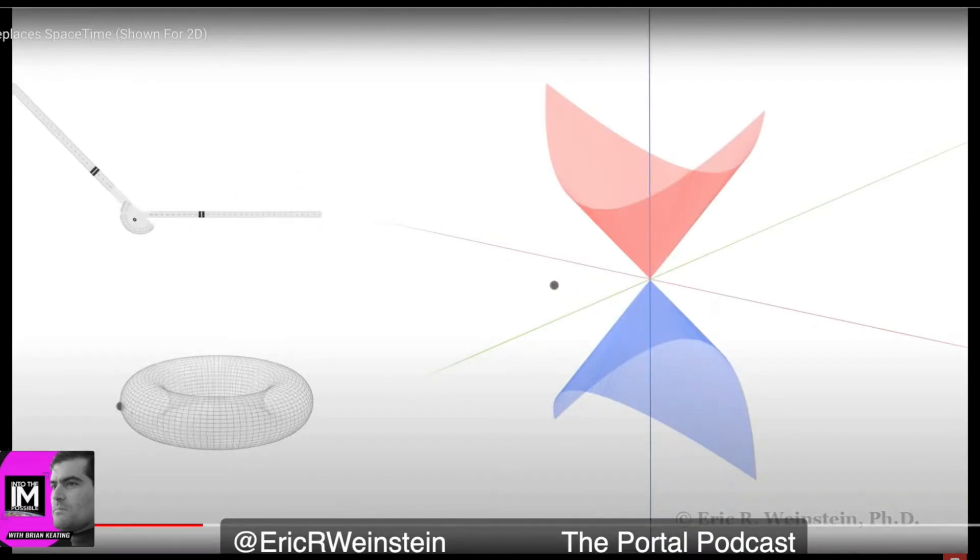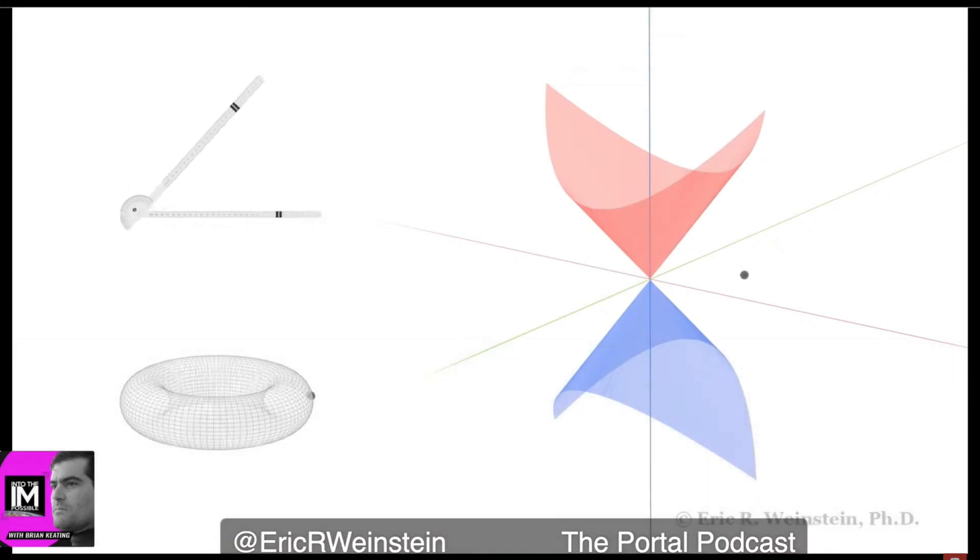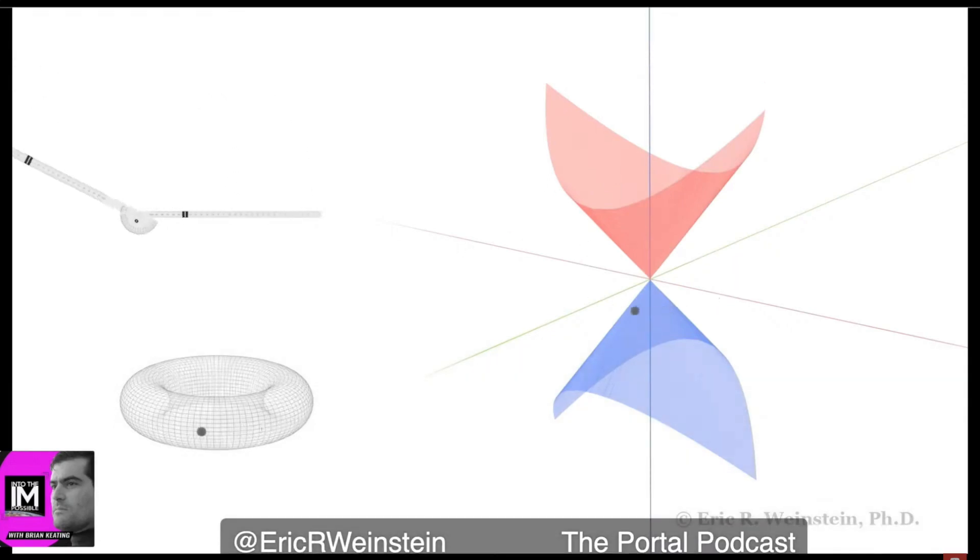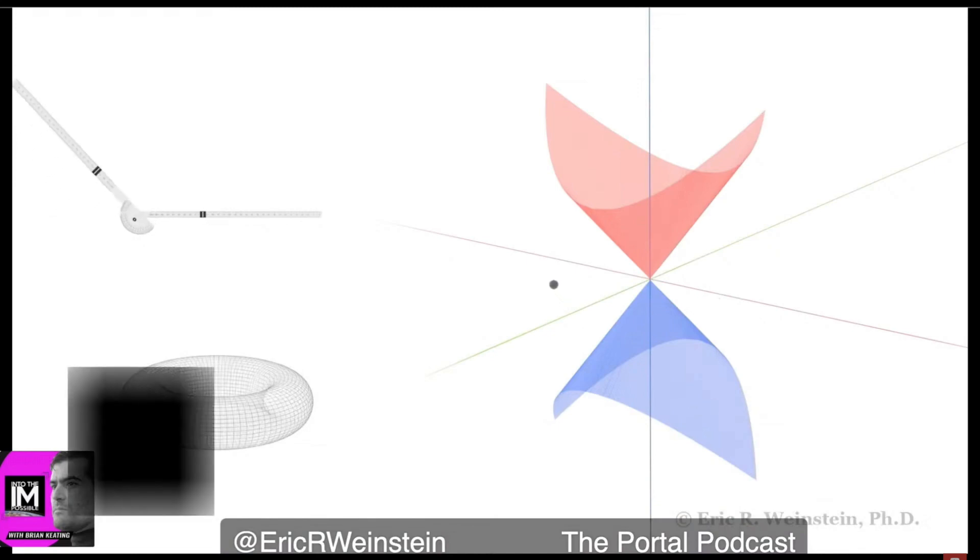I don't know if anyone's ever discussed the connection between Einstein and Pati and Salam. People have brought it up, but has it ever been fully explored? The point is that spinors on 14 look like spinors on 4, tensor spinors on some version of 10. And whether you're talking about spin 10 models, SU5 models, or SU4 cross SU2 cross SU2, which is spin 6 cross spin 4, isn't that exactly what we see in the standard model?